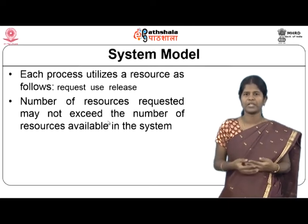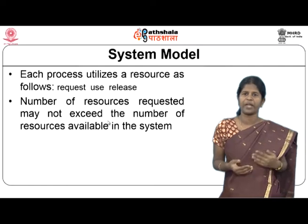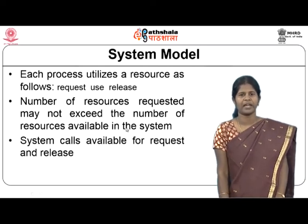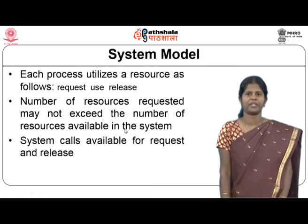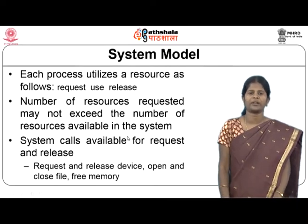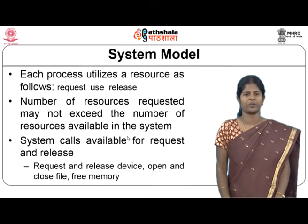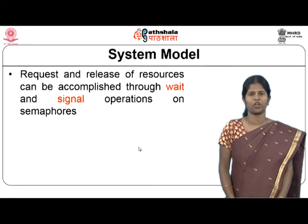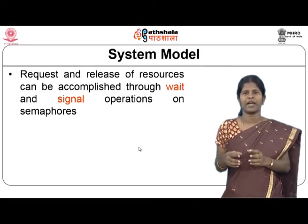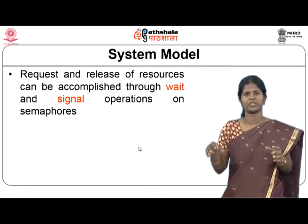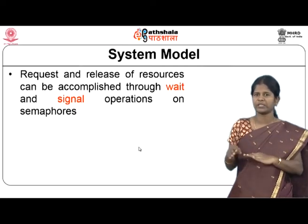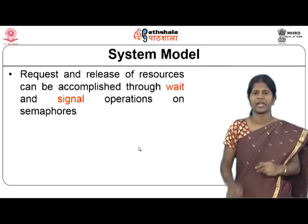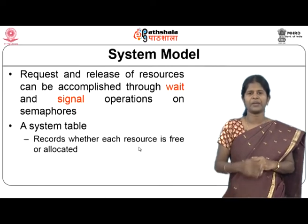Requesting and releasing resources can also be accomplished through wait and signal operations on semaphores. Any process needing a shared resource will wait on a semaphore, and after using the resource it will signal the semaphore. The semaphore maintains synchronization between multiple processes accessing that resource. The system maintains a system table that records whether each resource is free or allocated.